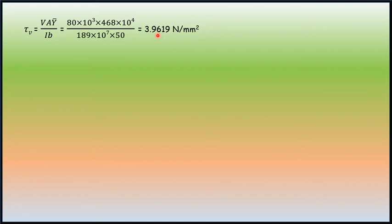Substituting the values of the known nomenclature V A ybar by Ib, we have the τv nominal shear stress as 3.9619 Newton per mm square. Area of horizontal pre-stressing, that is π by 4 times 5 square into 24 numbers, 471 mm square. Area of vertical pre-stressing π by 4 times 5 square into 2 numbers.